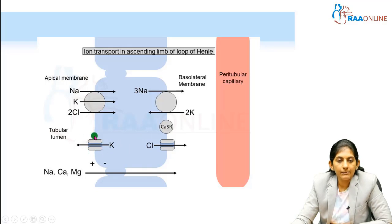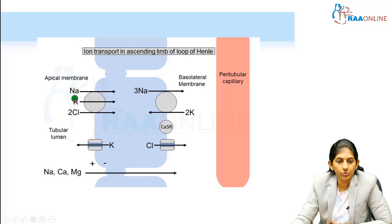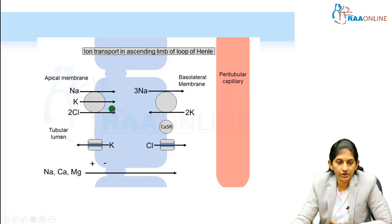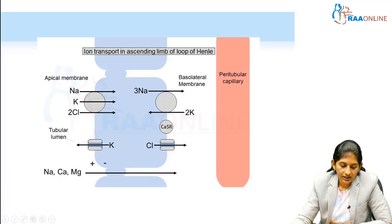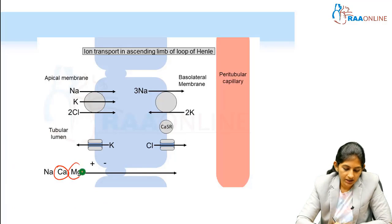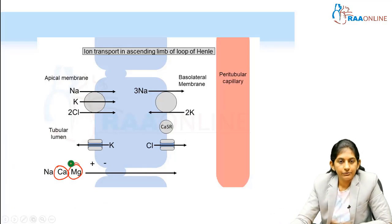There is a potassium channel where potassium will efflux out. All this sodium, potassium, two chloride co-transporter — because sodium and potassium (Na+, K+) will go inside to maintain neutrality, Cl- will also go inside. Potassium will come outside, whereas Cl will be reabsorbed, and because of the electrochemical gradient, calcium and magnesium will passively diffuse here.